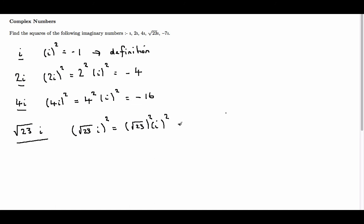Now, root 23 squared is just 23, and i squared is minus 1, so I get minus 23.